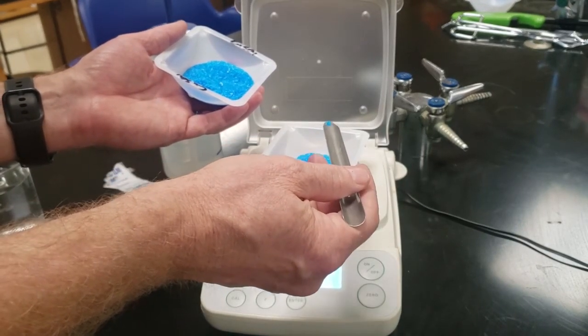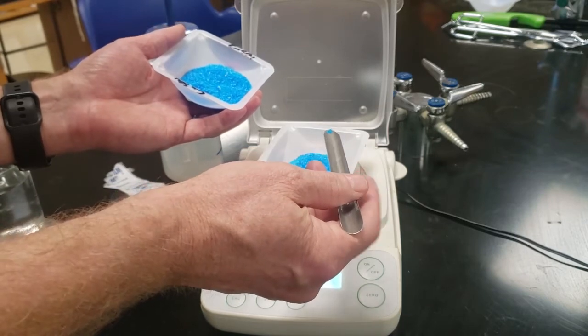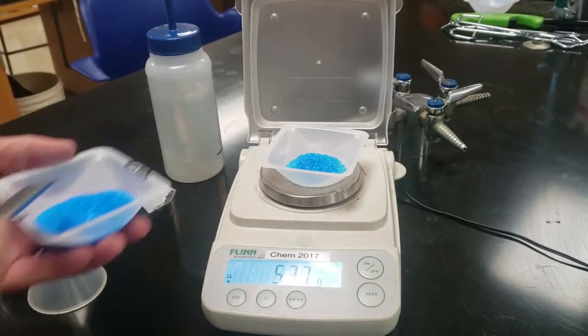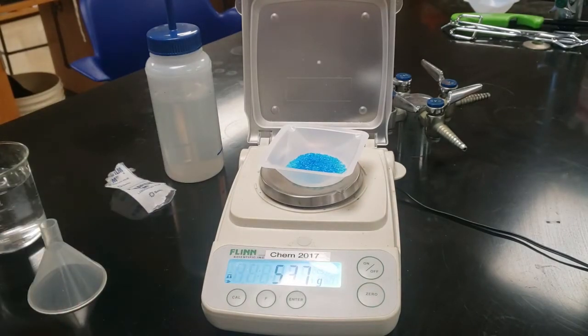You want it to be as close as possible to what we calculate. If it's more, then the concentration is going to be more. If it's less, it's going to be less. So we're going to use a method at the end to try to determine exactly what we have. Here, I've got 5.37 grams sitting on the scale.